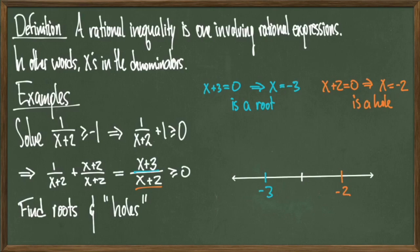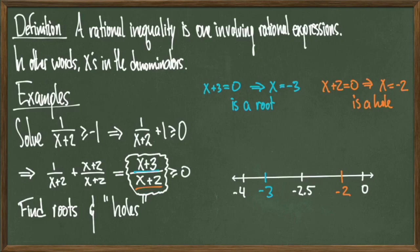So now I'm going to indicate those points on the number line. I take my numerator, set it equal to 0, and solve to find my root. I take my denominator, set it equal to 0, and find that x equals negative 2 is a point of discontinuity, so I need to exclude it from the number line. Since I want this expression to be greater than or equal to 0, I'll invoke the test point method. I'll pick test points negative 4, negative 2.5, and 0 because they go around the holes and roots I have found.